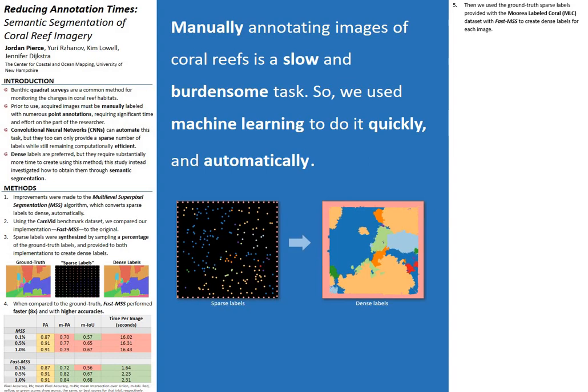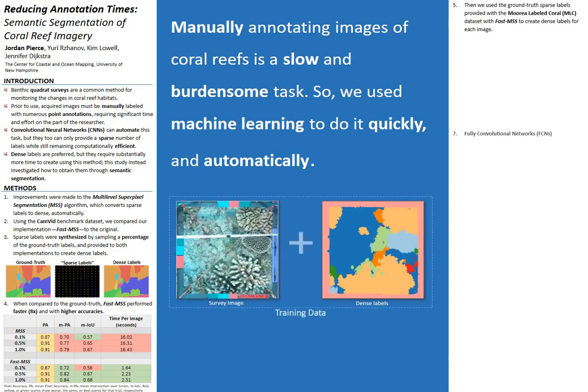At this point, we've demonstrated that FastMSS can be used to produce dense labels for images collected during benthic habitat surveys, but it still requires researchers to create sparse labels first. Thus, to demonstrate how researchers could obtain dense labels for novel images, we used the images from the MLC dataset and their newly created dense labels as training data to learn a fully convolutional neural network, a type of deep learning algorithm used for solving the computer vision task of semantic segmentation.